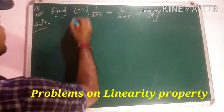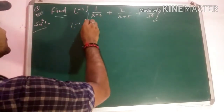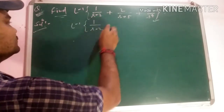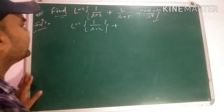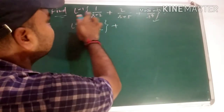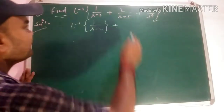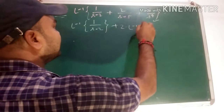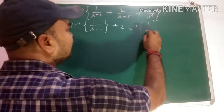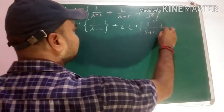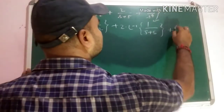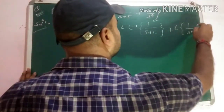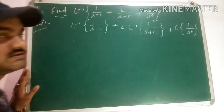Our question is L inverse of [1/(s-2) + 2/(s+5) + 6/s^4]. Applying linearity property, L inverse will be applied to each term separately. The constant 2 will be taken outside, giving 2·L inverse [1/(s+5)], and similarly 6 is a constant, so 6·L inverse [1/s^4].